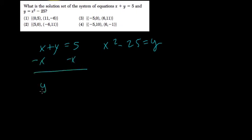Extract x from both sides here, so we get y equals 5 minus x. And since 5 minus x equals y here, and x squared minus 25 equals y there, we're going to set them equal to each other to see when they meet.